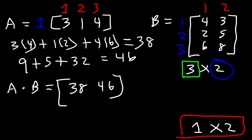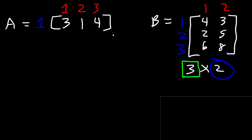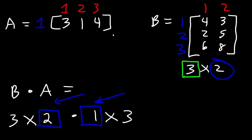As you can see, we have one row and two columns, so the resultant matrix is a 1 by 2 matrix. Now what about multiplying B by A instead of A by B? Matrix B is a 3 by 2 matrix and matrix A is a 1 by 3 matrix. Notice that the columns in the first matrix don't equal the number of rows in the second, so we cannot multiply these two matrices in this order. We can multiply A by B but we can't multiply B by A — the order in which you multiply two matrices is very important.